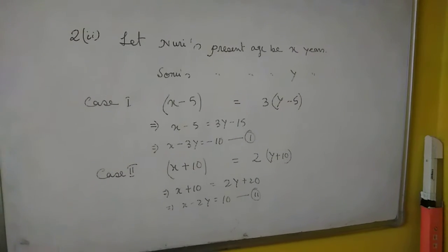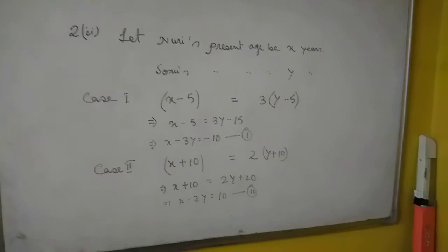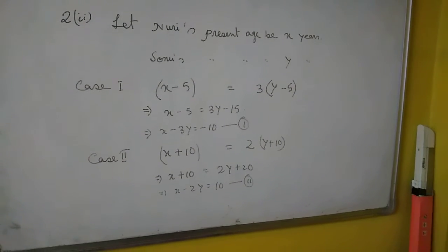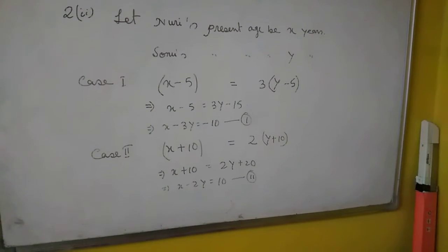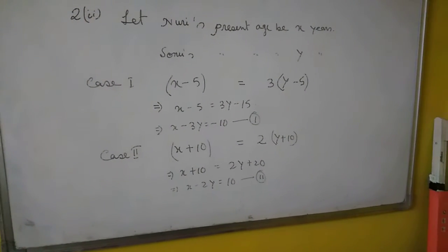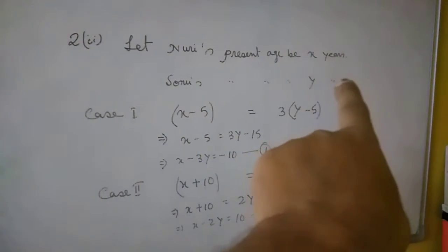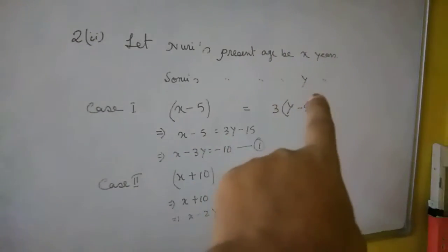This is question number 2 of exercise 3.4. Five years ago, Nuri was thrice as old as Sonu. Let Nuri's present age be X and Sonu's present age be Y.